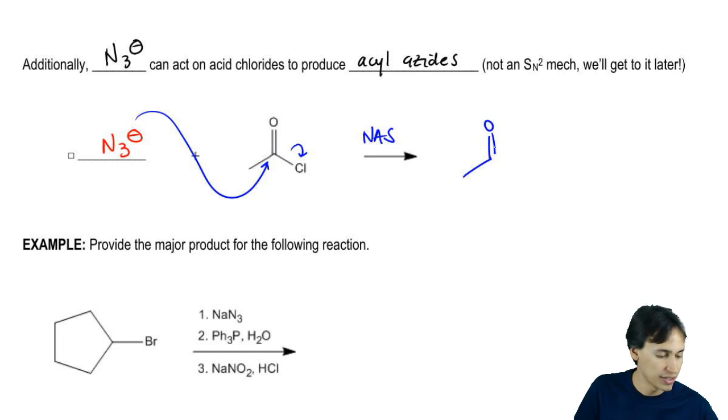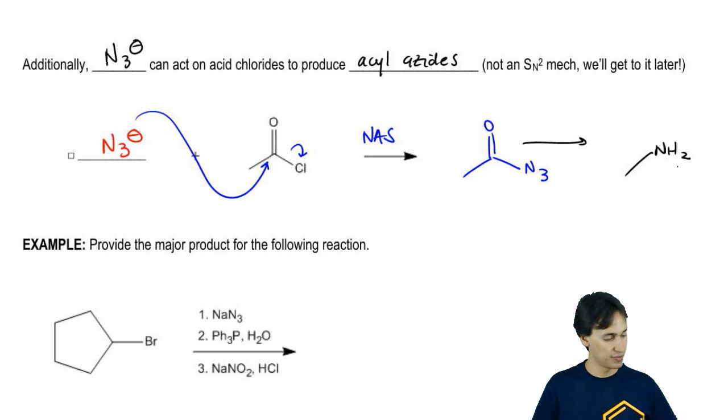What you wind up getting is acyl azide. Do you guys remember how you can turn an acyl azide into an amine? This one would look like this. What reagents could you use for that?